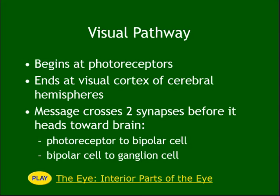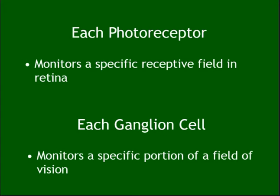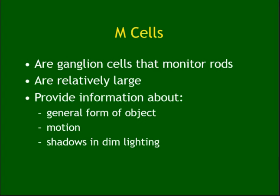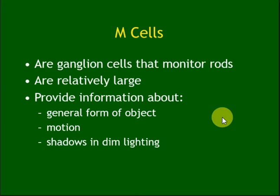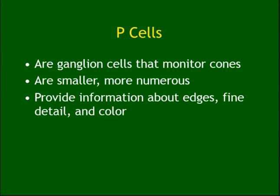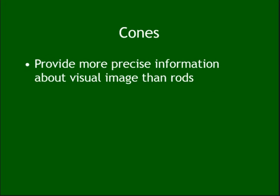The visual pathway: photoreceptors — rods and cones — to bipolar cells to ganglion cells. The ganglion cells have two types: M cells monitor rods, and P cells monitor cones.